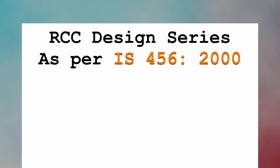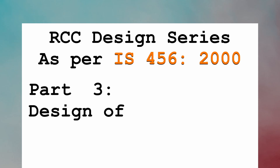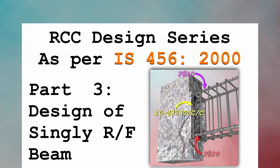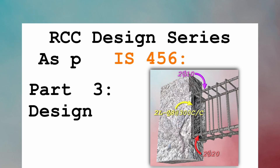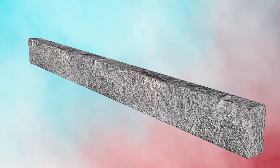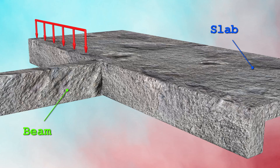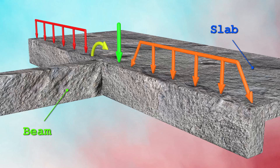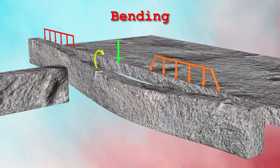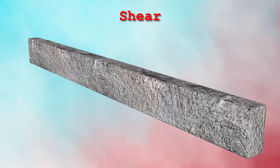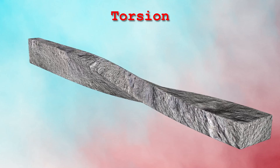Welcome to part 3 of the RCC design series, which is about design of a singly reinforced concrete beam. A beam is a flexural member subjected to loads from adjacent slabs and beams in the form of uniformly distributed, uniformly varying, and point loads or moments. These loads cause bending, shear, and torsional forces in the beam.